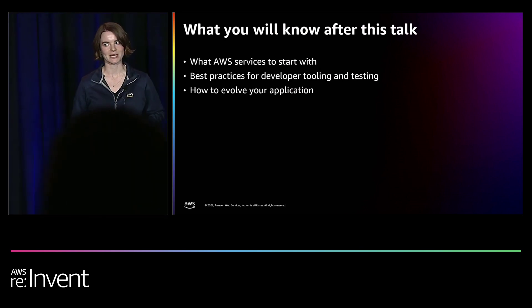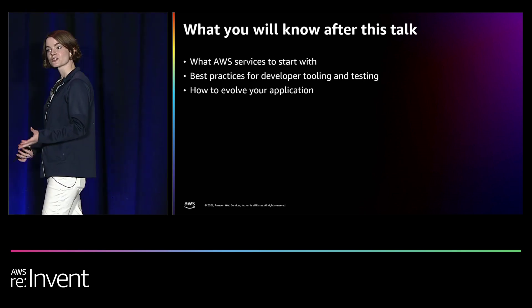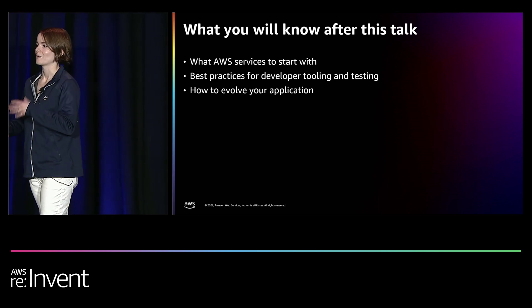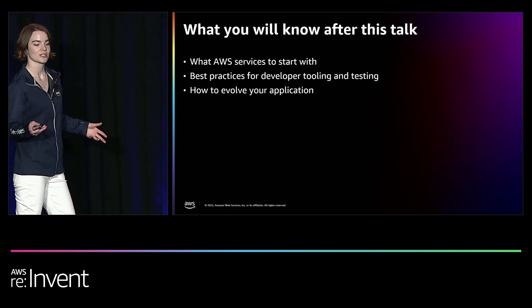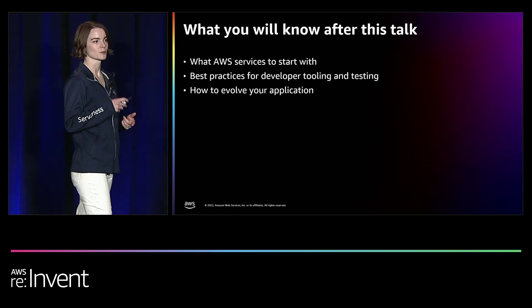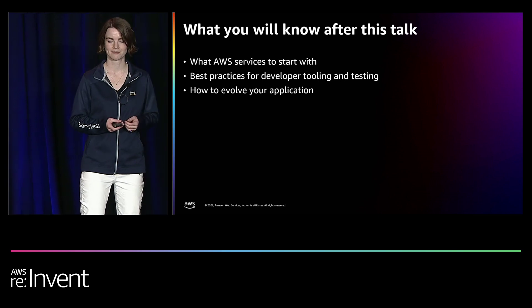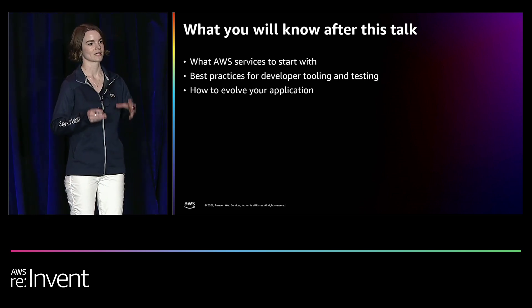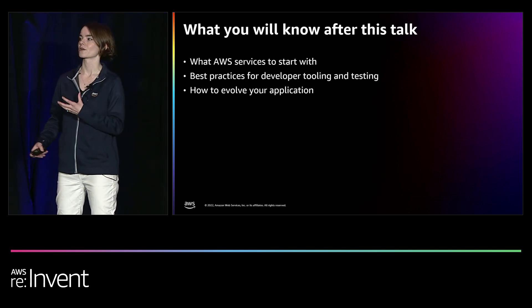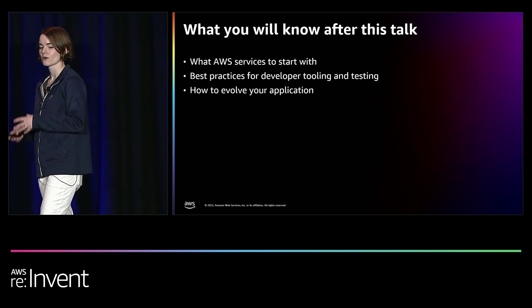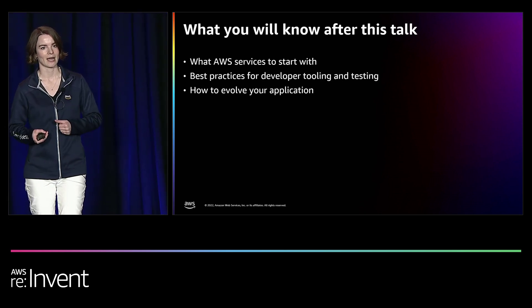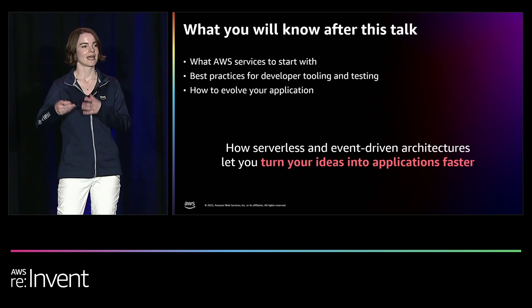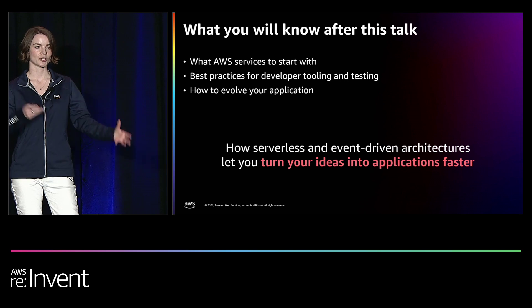So what are you going to come away with at the end of this hour? We're going to talk about what serverless services to use, how to start small with just a couple of AWS serverless services and evolve your application over time. We'll also talk about best practices for developer tooling and testing serverless applications. And then lastly, we'll talk about how you can evolve your application, since serverless applications are meant to be dynamic and iterate as your customer requirements grow and change. Fundamentally, I'm hoping you come away with a sense of how building serverless and event-driven architectures can help you turn your ideas into an application faster.